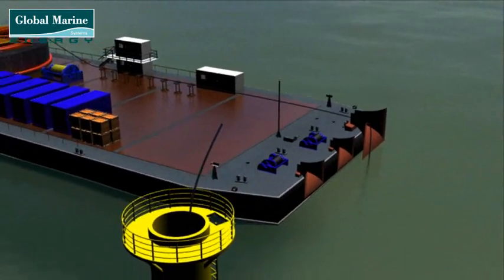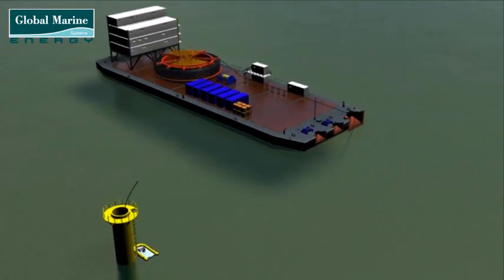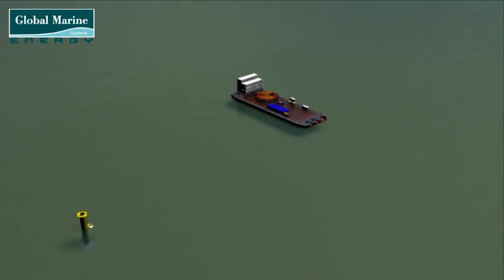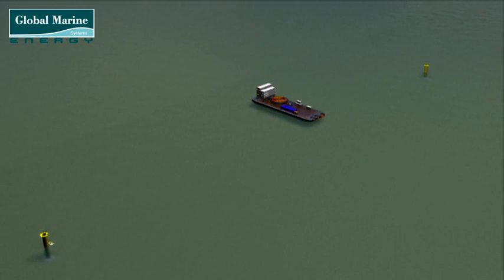Once the cable is secure, the barge moves away towards the other wind turbine foundation, laying cable on the seabed as it goes. The barge maneuvers in such a way, laying the cable in an S-bend, allowing enough surplus for the eventual pull from the second foundation.